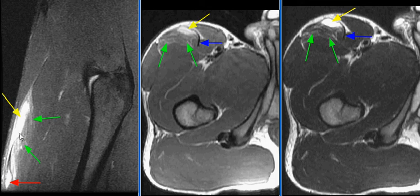The second, more distal intramuscular hematoma is located just deep to the tendon-anterior fascial interface.